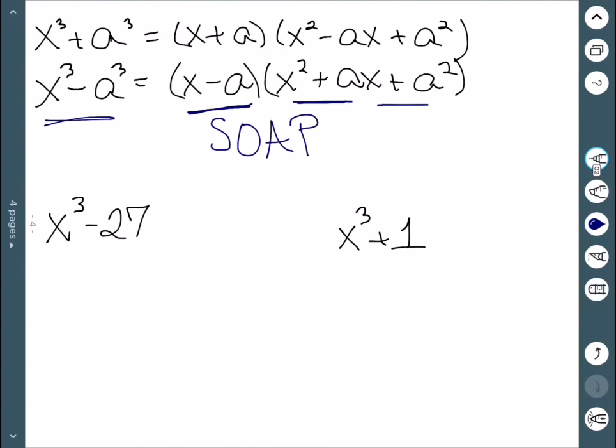So my examples, x cubed minus 27. We can see that these are perfect cubes. In particular, 3 cubed is 27. So this would be x minus 3 times x squared plus 3x plus 9.